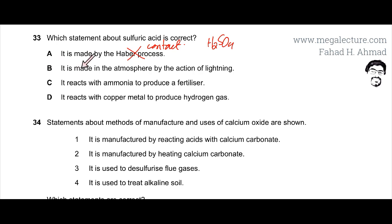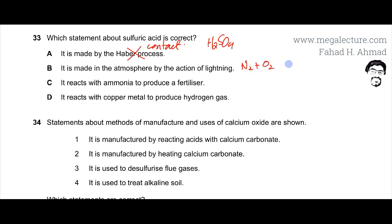The second option states it is made in the atmosphere by the action of lightning. The action of lightning burns air, which contains nitrogen and oxygen, and ends up producing nitrogen monoxide and NO2 — not sulfuric acid. So that is also incorrect.